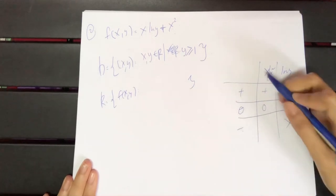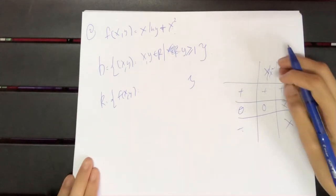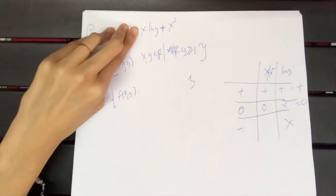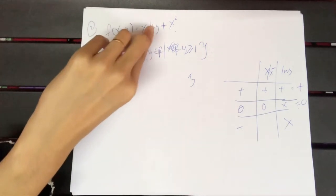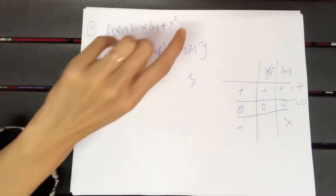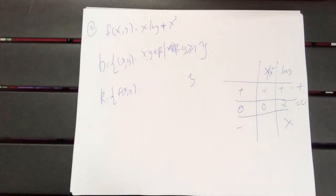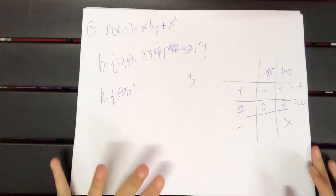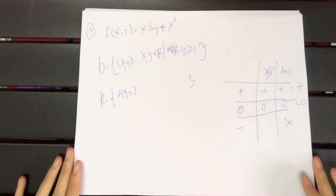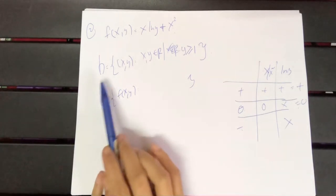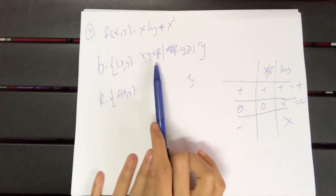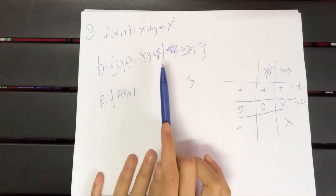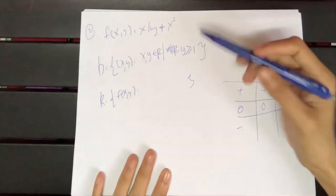If x is negative, you might get either negative or positive depending on the values. For example, if x = -5 and ln(y) = 0 (i.e., y = 1), then x² = 25 and x·ln(y) — wait, actually this is x² + ln(y), so the x² term is always positive. Let me reconsider the function structure here.